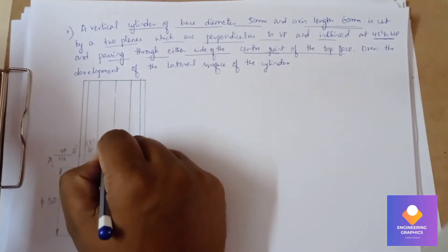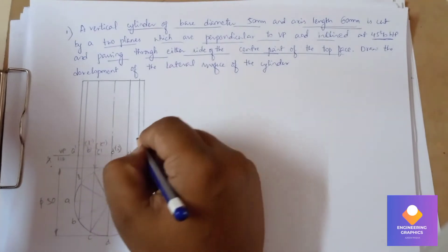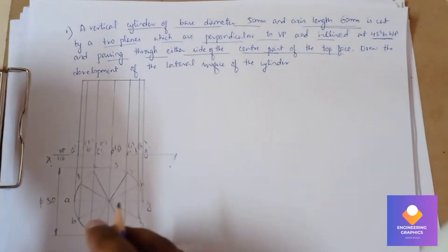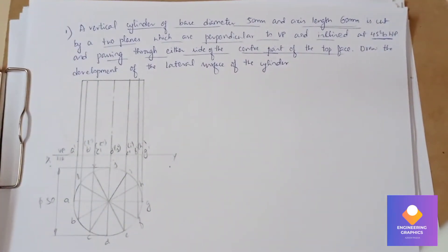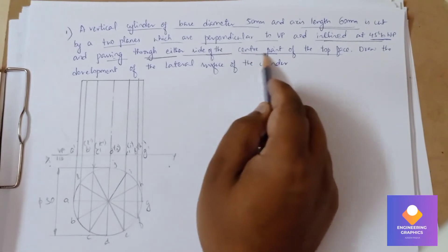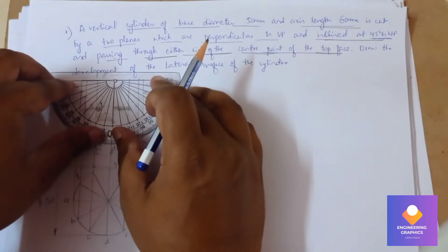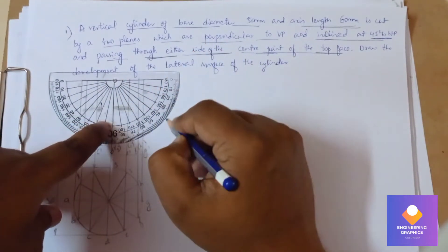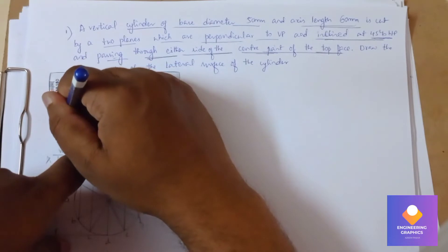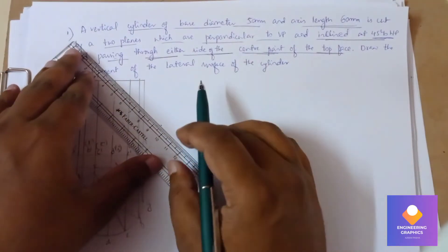Each face visible is written normally; each face not visible is written within brackets. Now we have to draw the two planes which are perpendicular to VP and inclined at 45 degrees to HP. There are two section planes. Exactly from the center point of the top face, on either side, mark at an angle of 45 degrees. Draw the section planes now.